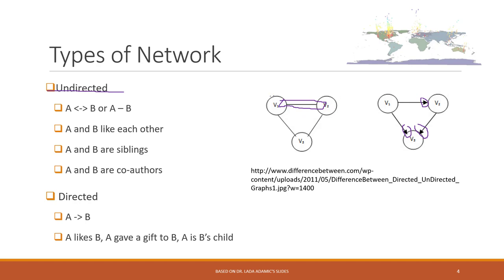Both nodes on both sides of the edge have the same symmetric relationship. For example, A and B like each other, they are siblings, or they are co-authors of a book. Those are examples of undirected networks. Sometimes the relationships have a direction. For example, A likes B, but B does not like A. That is a directed network.